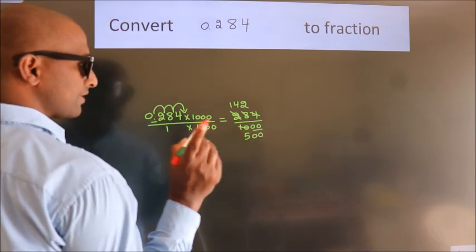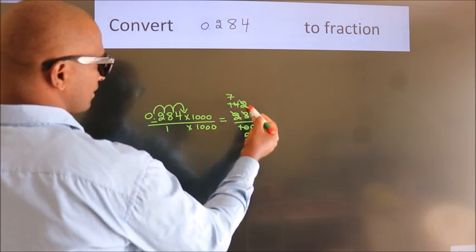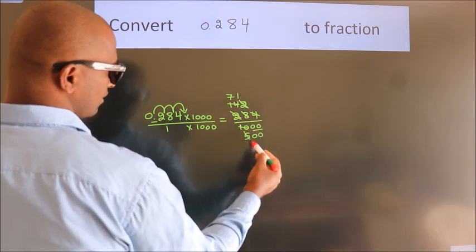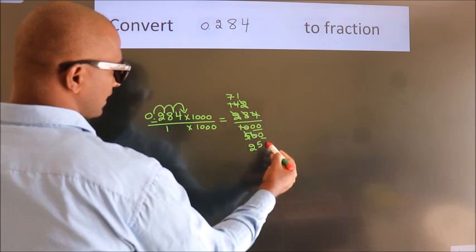I cancel with 2 again. 2 sevens, 2 ones, 2 twos, 2 fives, this zero as it is down.